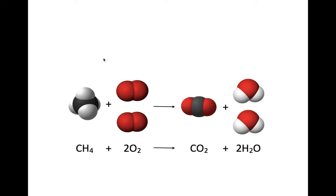That was me looking at the picture, but you have to be able to do the same thing with the chemical formulas. We would say: one carbon here, one carbon here; four hydrogens here, and two times two gives me four hydrogens here; two times two is four oxygens — I have two oxygens here, plus two here, giving a total of four oxygens — the same as having four over here. This is honestly just going to take tons and tons of practice, and that's what I will be giving you.